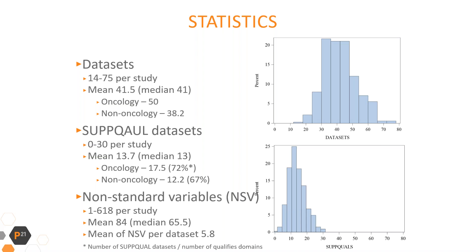Collected data from 325 studies includes more than 27,000 records of unique sponsor, study, dataset, QNAM values, which represent implementation of non-standard SDTM variables in SUPPQUAL datasets. Number of non-standard variables in studies varies from 1 to 618, with a mean of 84 and a median of 65.5.